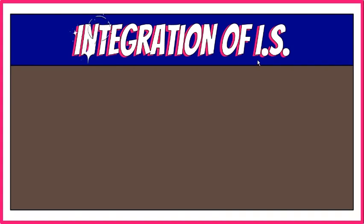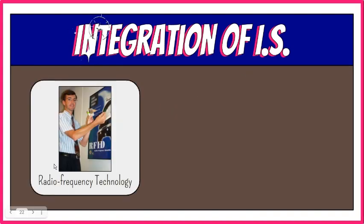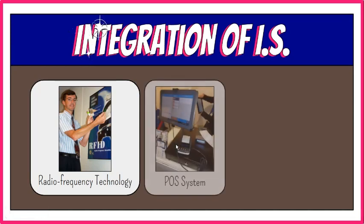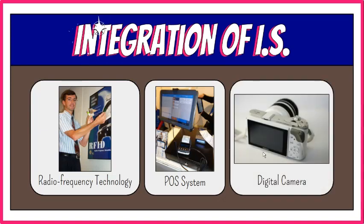Today, organizations invest in information systems and other technologies that would set them apart from other competitors, potentially build a barrier for entry of new competitors, and help them to stay competitive and profitable. Examples of this include a transportation company investing in radiofrequency technology to tag and trace products as they move from one location to another, a retail store investing in a point-of-sale system to make customers' transactions easier and faster, and the response of traditional film companies when digital cameras became popular — they had to provide similar or better digital products to stay competitive and profitable.